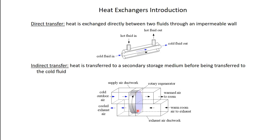A lot of times they'll coat this device with a desiccant so you can also transfer moisture — taking moisture out of the warm air and transferring it to the cold air. It works equally well in summer when you want to transfer energy and moisture from the hot humid outdoor air to the air from the room. We're not going to talk in this class about indirect transfer heat exchangers — there's information in the book if you're interested. We're going to focus on direct transfer heat exchangers.